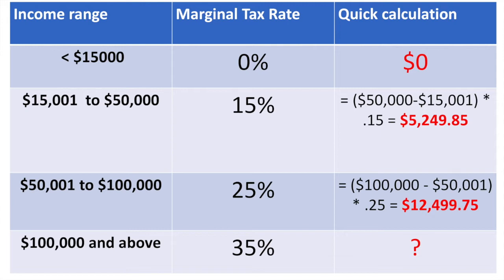For the second bracket, from $15,001 to $50,000, the marginal rate of tax is 15%, meaning any income you earn in this range is taxed at that rate. If you earn more than $50,000, the tax owed on this portion of your income is equal to 15% of the difference between $50,000 and $15,001, which is approximately $5,249.85.